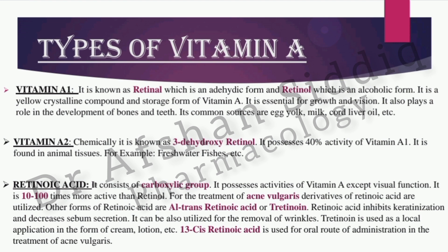There are 3 different types of vitamin A: vitamin A1, vitamin A2, and retinoic acid. Vitamin A1 is of 2 types based on its chemical structure. One is retinol, which contains an aldehydic group as a functional group in the side chain, and another is retinol, which contains a hydroxyl group in the side chain. All these vitamins are essential for the development of growth, teeth, and bones. The major source of vitamin A is from the animal kingdom, not the plant kingdom.